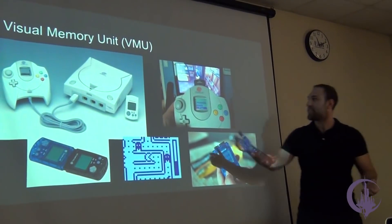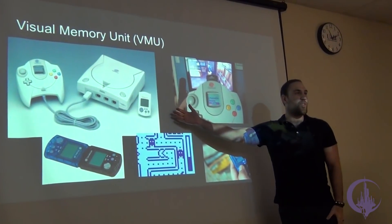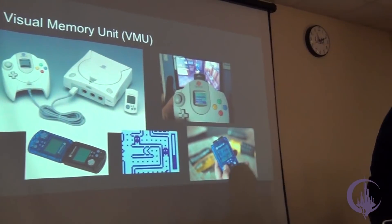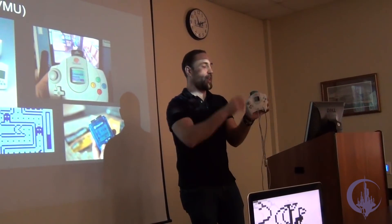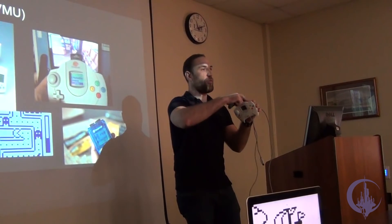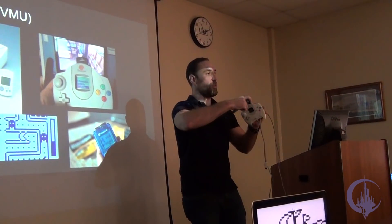The year 1999, the greatest game console on the planet came out, the Sega Dreamcast. With it came the visual memory unit, which is the memory card for this thing right here. They came in different colors.